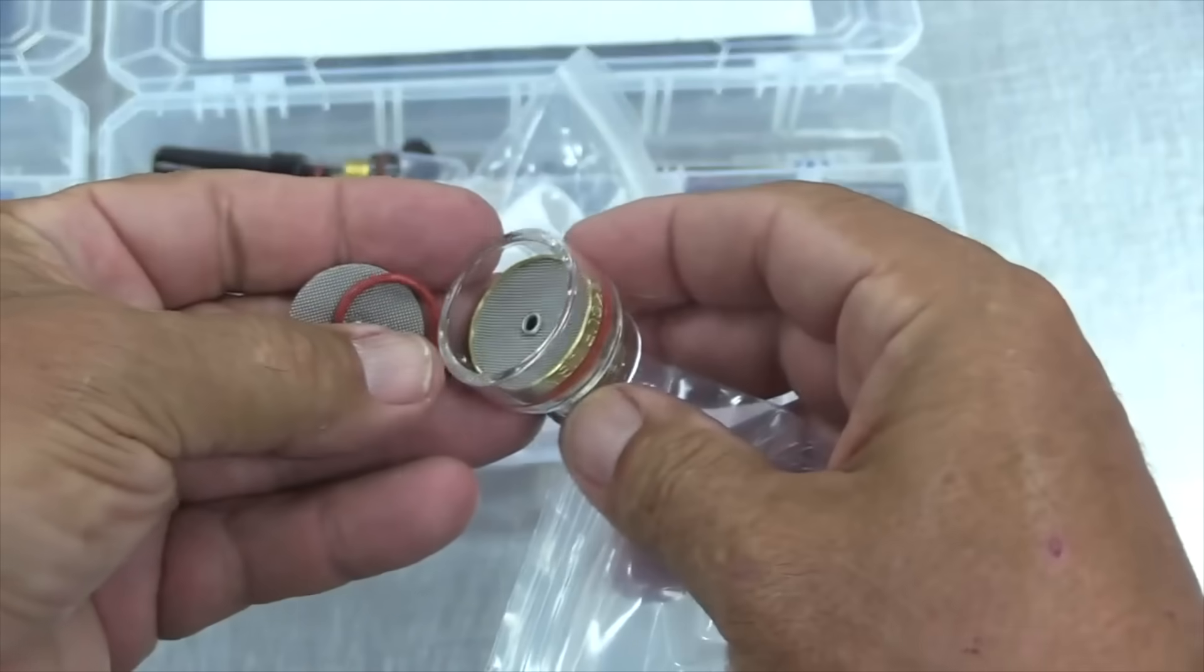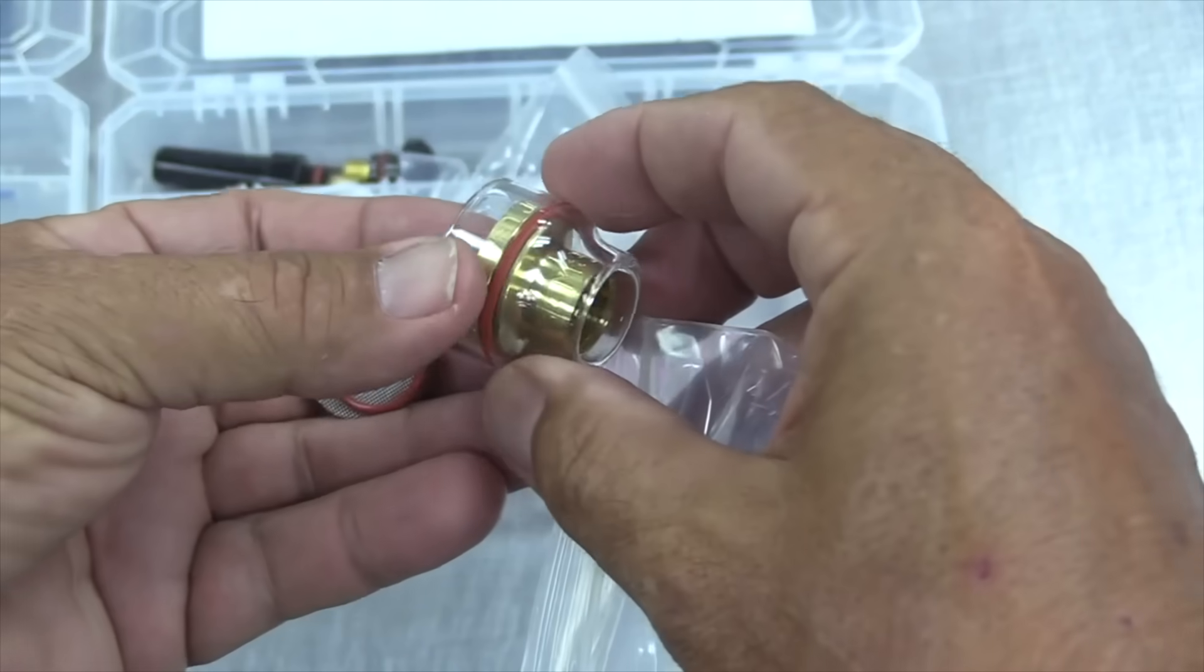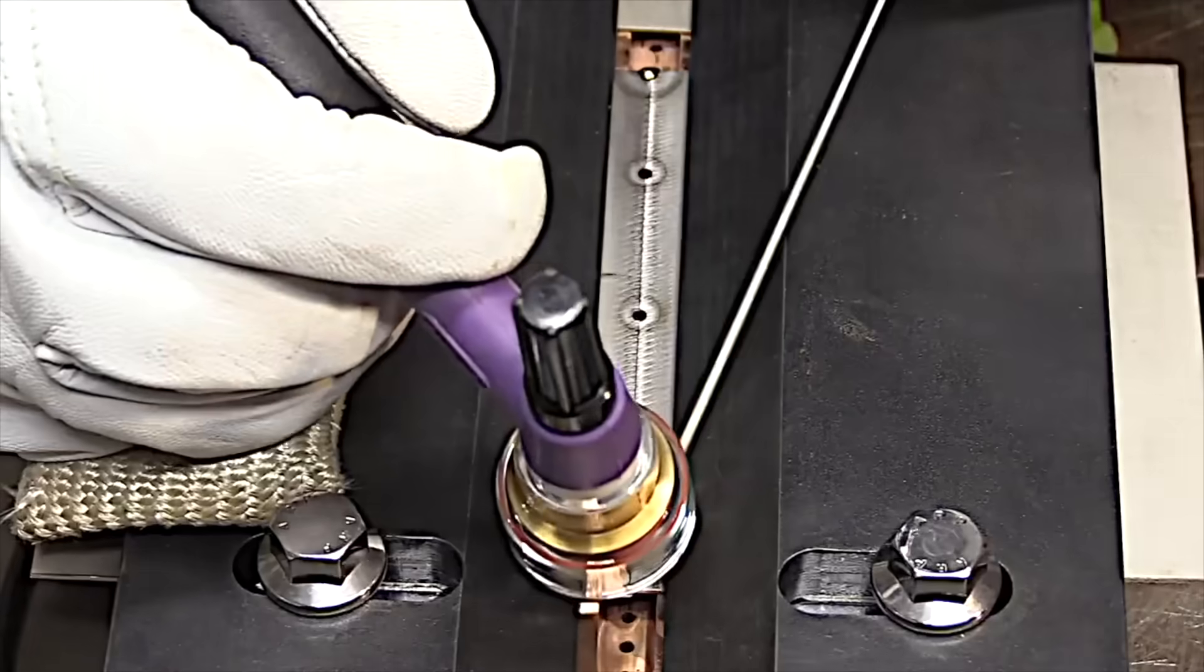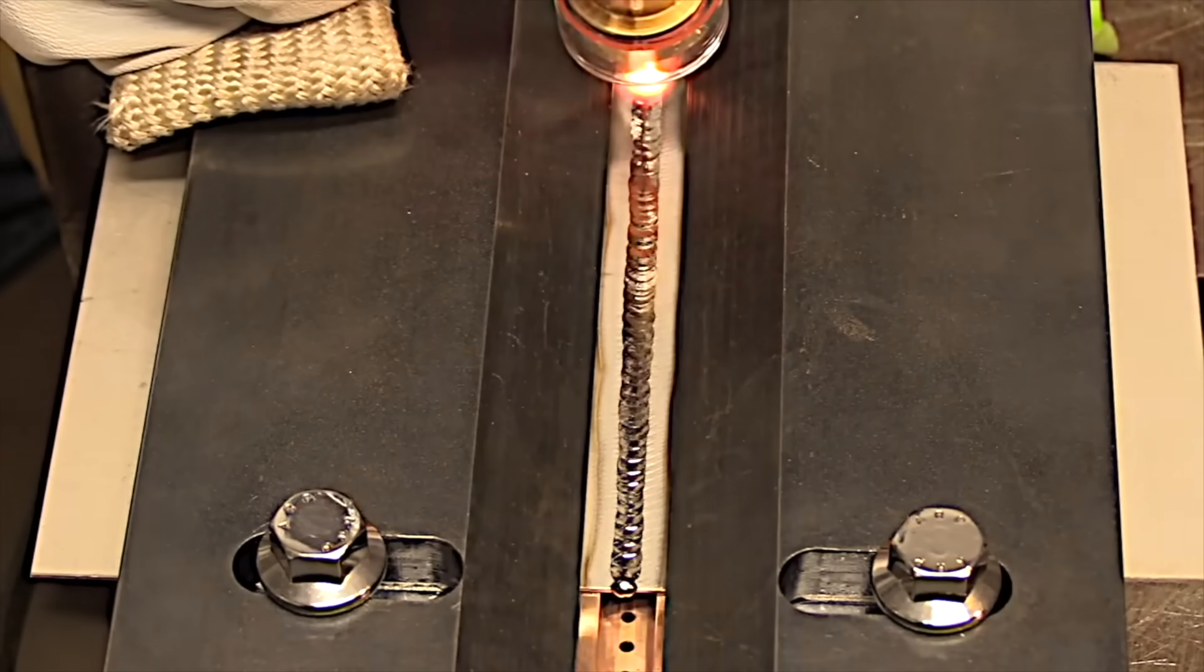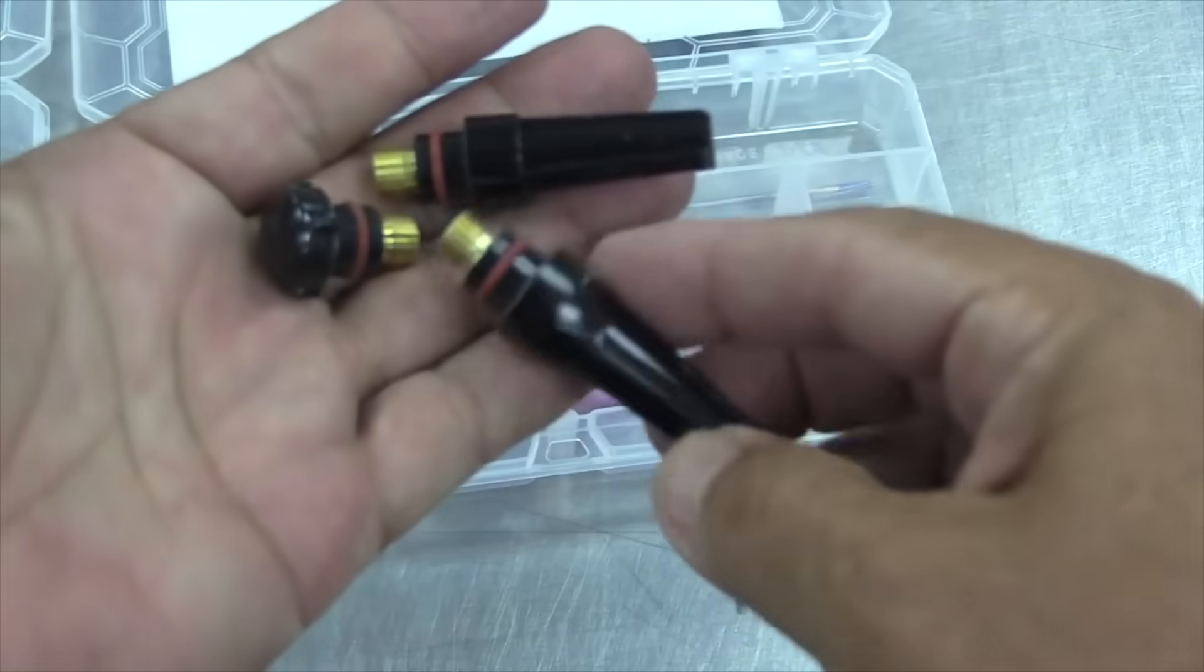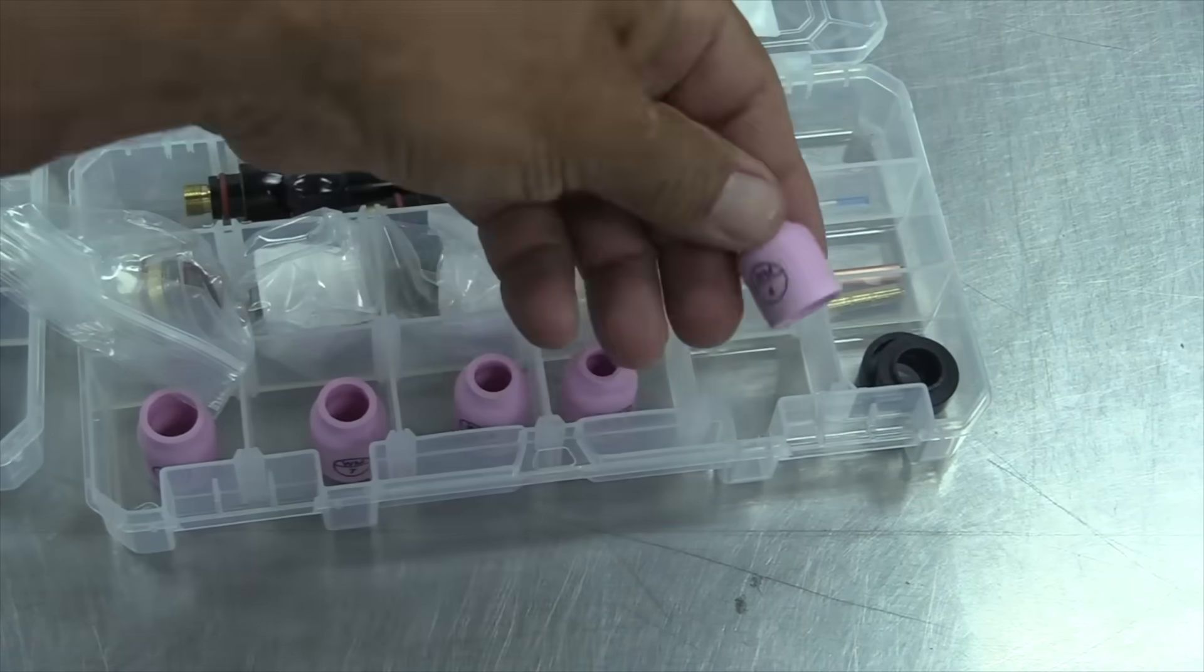The clear BBW is a great cup for titanium. The bigger the cup generally speaking the more gas flow it requires. This one might require as much as 35 or 40 CFH but when you're welding titanium the little extra argon is just cost of doing business. It's necessary. It comes with the long cap, the medium cap, and the short button cap.